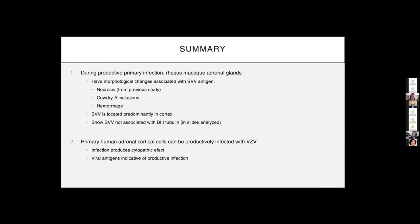In summary, during productive primary infection, rhesus macaque adrenal glands do have morphological changes associated with the antigen, including Cowdry inclusions and hemorrhage. SVV is located predominantly in the adrenal cortex but is not associated with beta-3 tubulin in the slides analyzed. In the human component, primary human adrenal cortical cells can be productively infected with VZV, as evidenced by the cytopathic effect and the expression of viral antigens, indicative of productive infection.